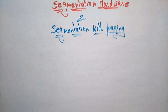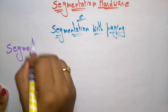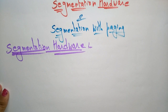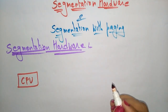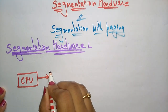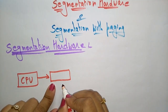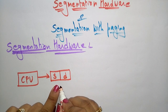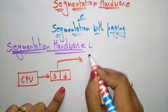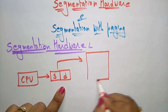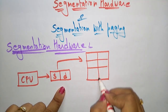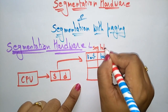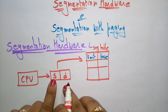First let us take the segmentation hardware. The CPU sends data in the form of a logical address, where each segment holds a logical address that is a segment name plus offset — D is the offset. Each segment and offset will be stored in the form of a segment table, which stores the limit and the base. Whatever segment the CPU sends, that segment has a limit and a base.